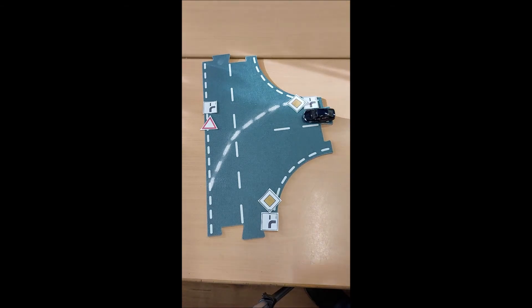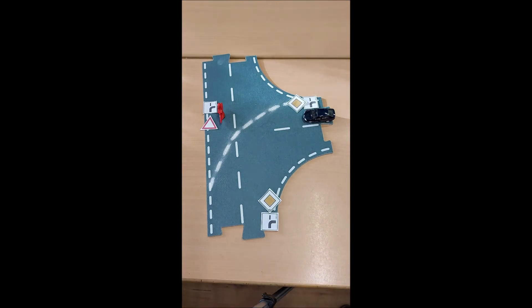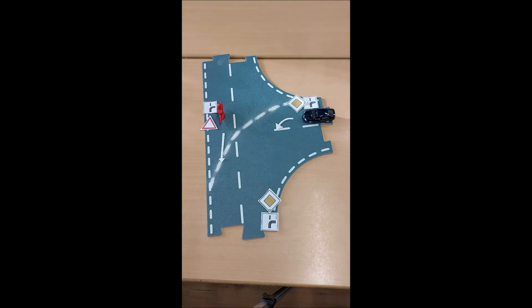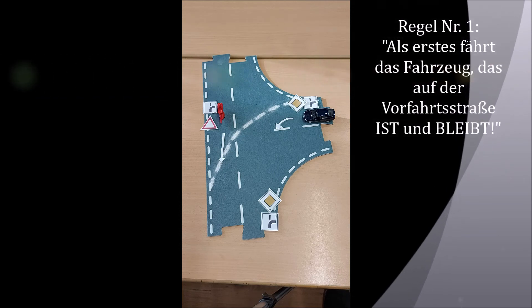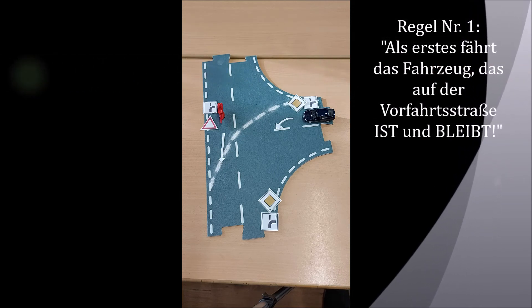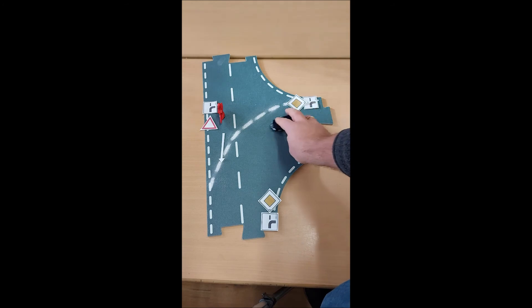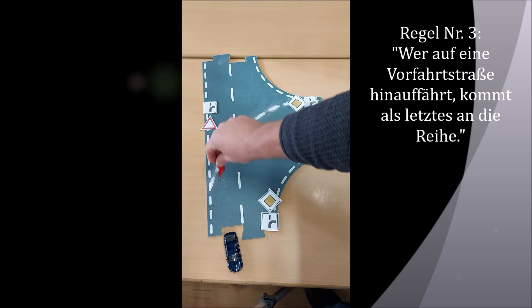Jetzt kommt das Auto mal von da. Und der Fahrradfahrer von da. Das Auto möchte um die Ecke fahren. Und der Fahrradfahrer möchte geradeaus. Wer fährt jetzt als erstes? Also, wie war die Regel? Wer auf der Vorfahrtsstraße ist und bleibt, darf als erstes. Ist das hier einer? Ja, das ist das dunkle Auto. Und dann kommt der, der nicht auf der Vorfahrtsstraße ist. Also das Auto fährt als erstes. Und dann fährt der Fahrradfahrer.